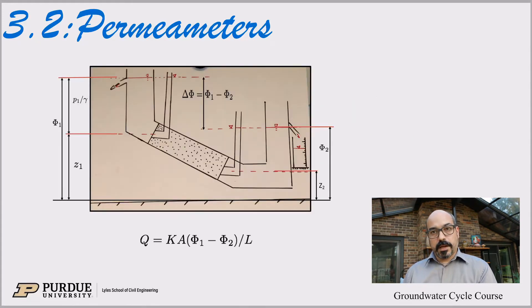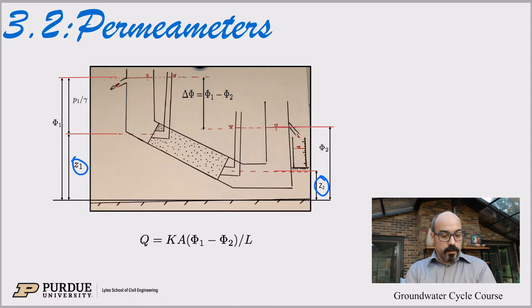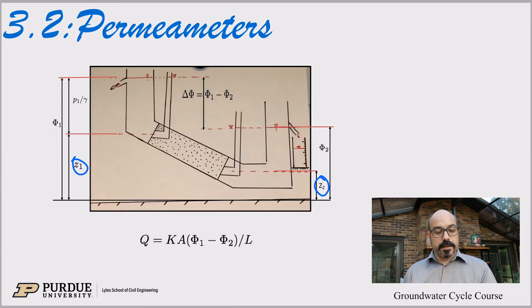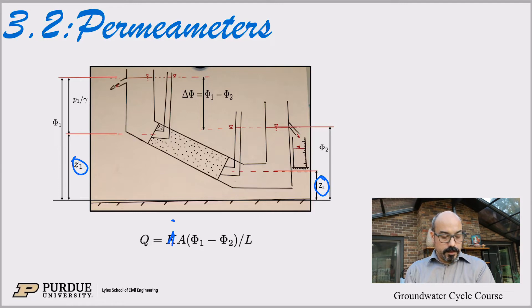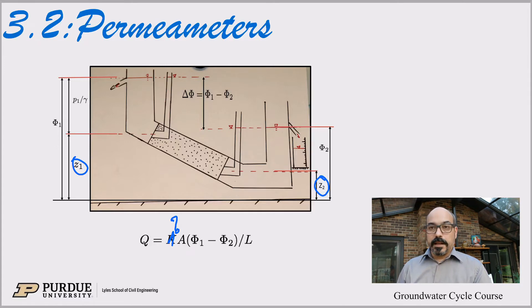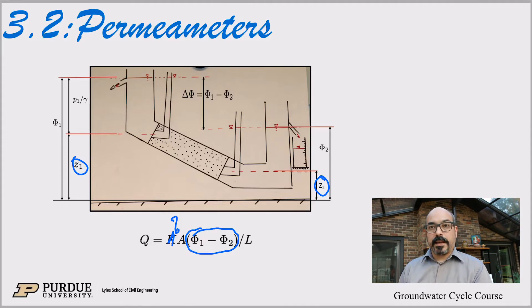Just a quick note: we talked about head in the last module. If you have a slanted permeameter or a column that is not vertical, you have to account for the difference in elevation. It's really the head difference, not just the height difference, that's important. The head would be Z plus P over gamma, not just the vertical distance. So this unknown is called hydraulic conductivity — the first time I'm naming it. It's a very important factor.